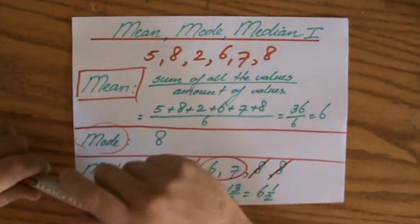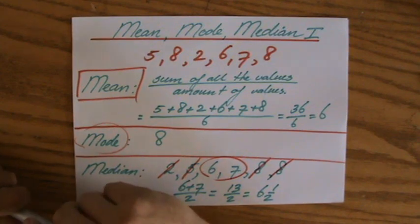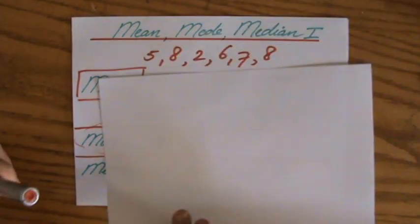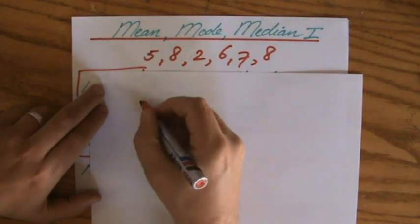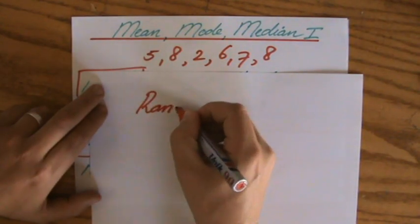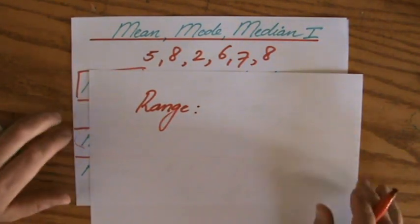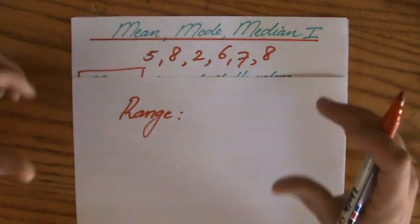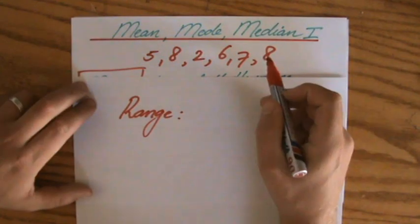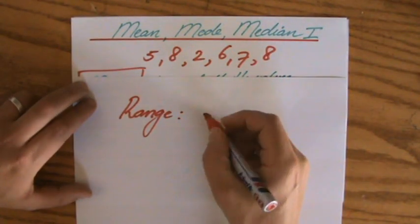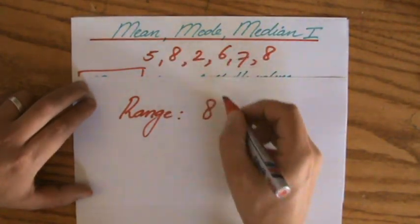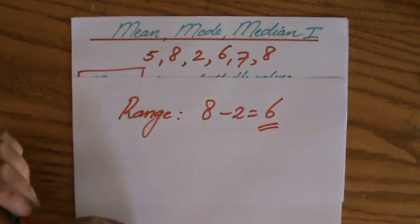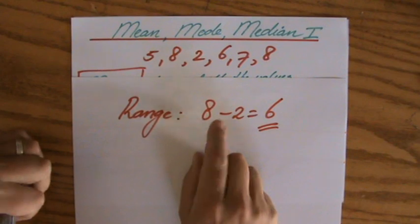Now, what is the range? The range is the difference between the largest piece of information and the smallest piece of information. So the largest value is eight and the smallest is two, making the range six — you take the largest piece of information and subtract the smallest.